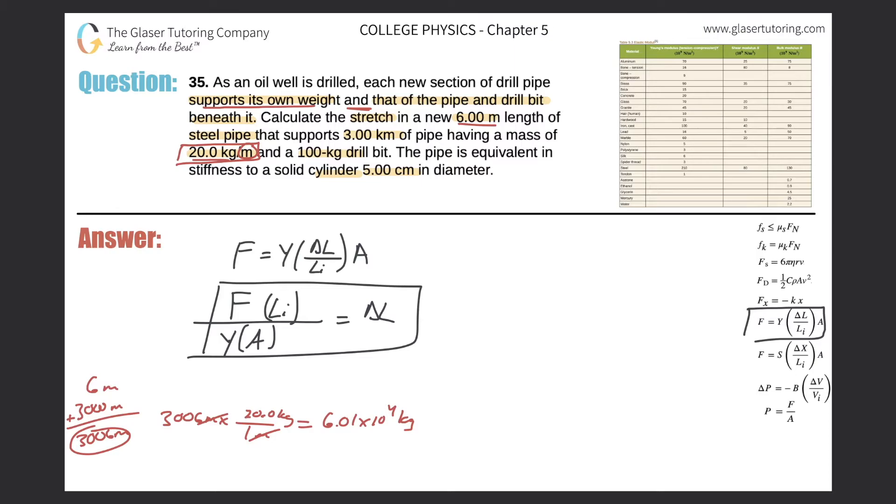That's the total mass of the pipe, but it also says it's also supporting the 100 kilogram drill bit. So I got to add 100 kilograms to this value, and when I do so it becomes 6.02 times 10 to the fourth kilograms. This is the total mass of everything that's being supported by the new six meter length of pipe. So if this is the mass, how do I find the force? Simple. Weight is equal to mass times gravity. So the weight here will be equal to 6.02 times 10 to the fourth multiplied by 9.80. We get a value of 5.90 times 10 to the fifth newtons. This is the weight, the force. So I found my f value.